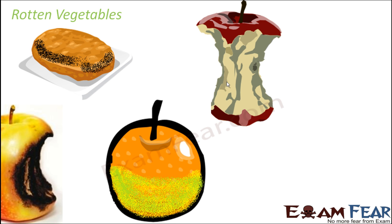Now, have you ever seen that if you keep a fruit or vegetable for a long time, after a couple of days it starts to rot? That is also a change. The black layers you see on the potato is a change, and the color of the apple or orange changes to yellowish brown — that is also a change.